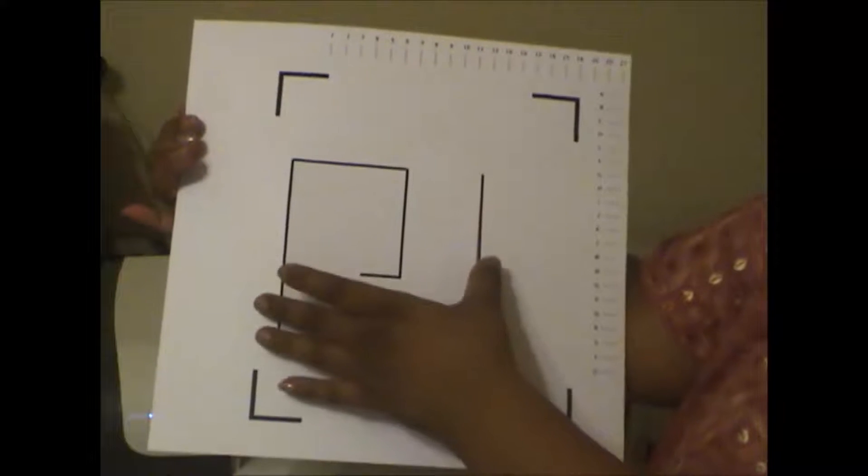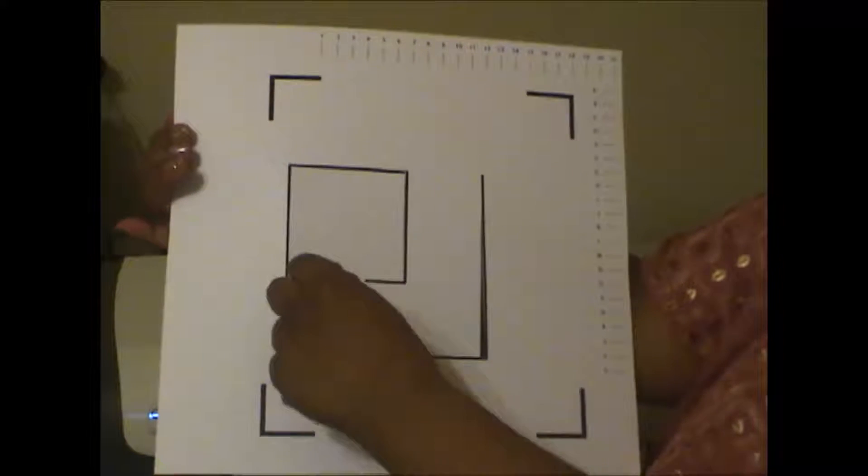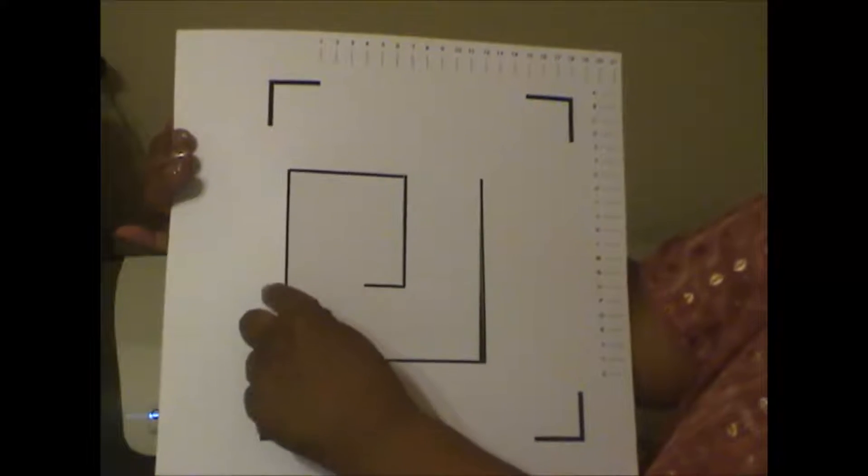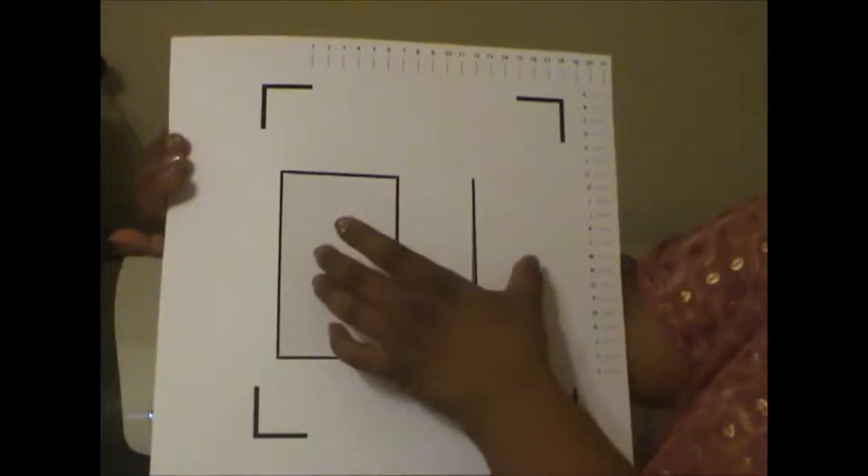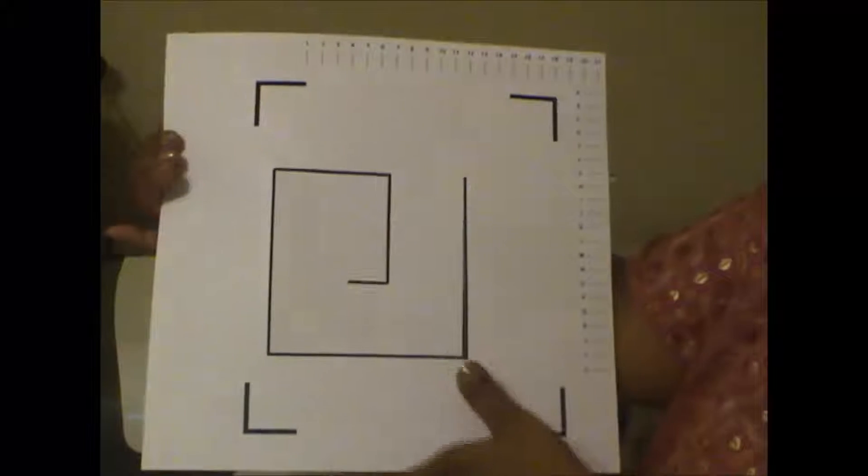When we do a test cut, offset usually means the whole thing moves or shifts either to the left, to the right, to the top, or to the bottom.